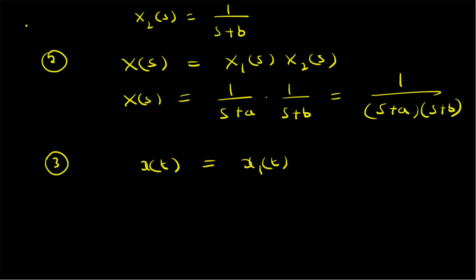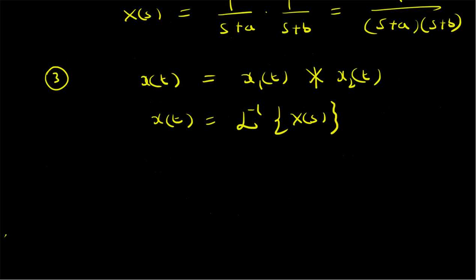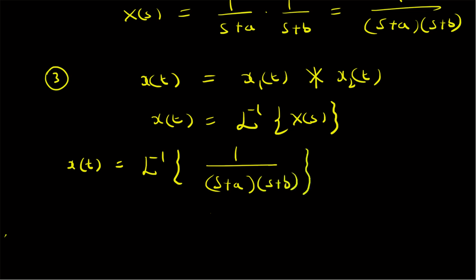Step three: we have to find x(t), the convolution of x1(t) with x2(t). Using the Laplace transform method, x(t) is equal to the inverse Laplace transform of X(s). That means x(t) = inverse Laplace transform of 1/[(s + a)(s + b)]. So we have to find the inverse Laplace transform of this function.